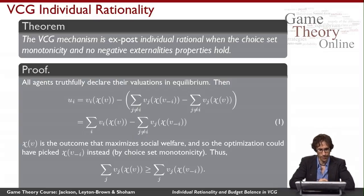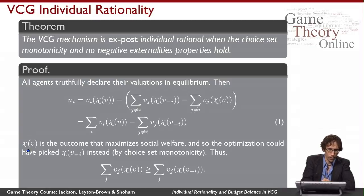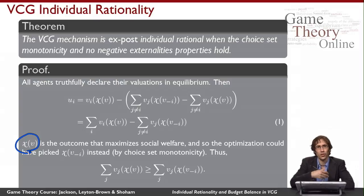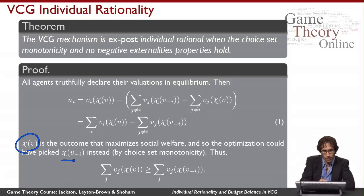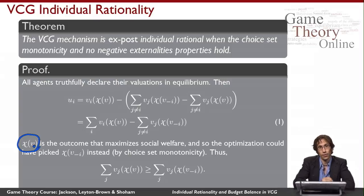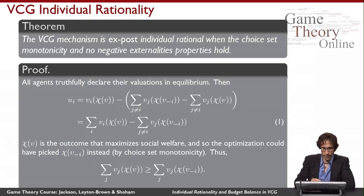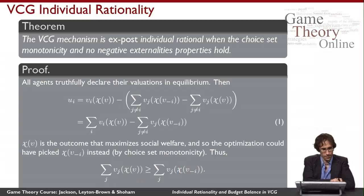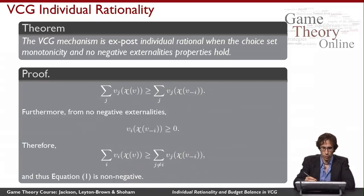Now comes the part where I use choice set monotonicity. The outcome X(V) is what VCG chose — it maximizes social welfare. By choice set monotonicity, the outcome X(V minus i) was also one of the available choices when we picked X(V) instead. So there must have been at least as much social welfare under X(V) as under X(V minus i); otherwise the optimization would have just picked X(V minus i). Writing that as an equation: the sum of agents' values for X(V) is at least as big as for X(V minus i).